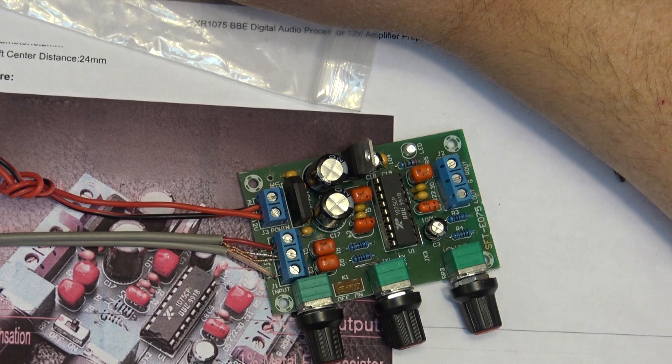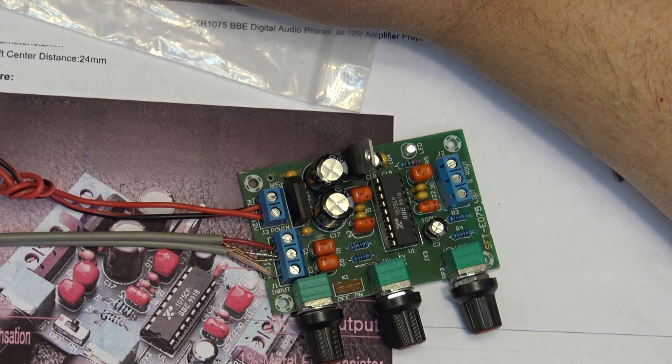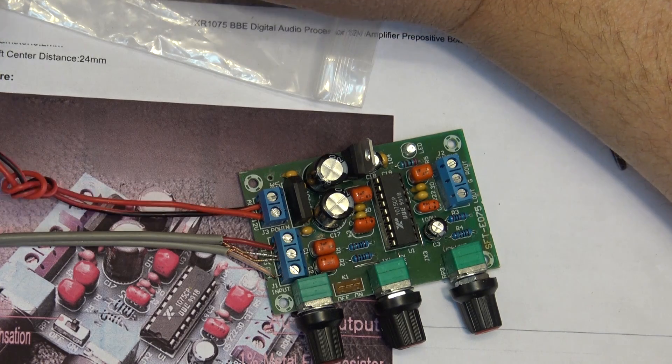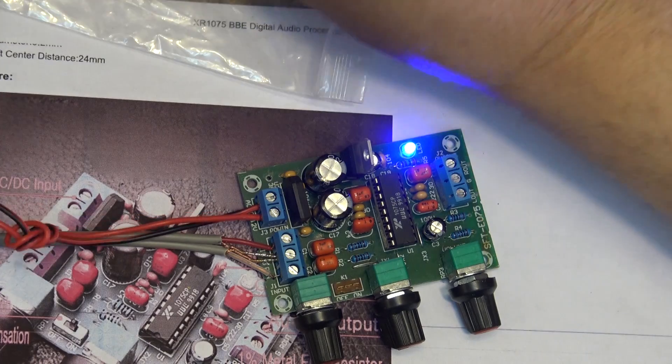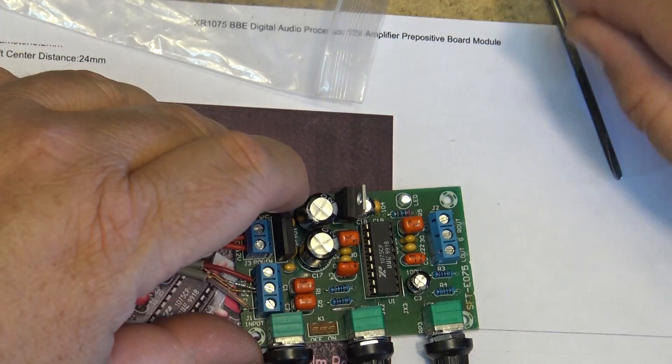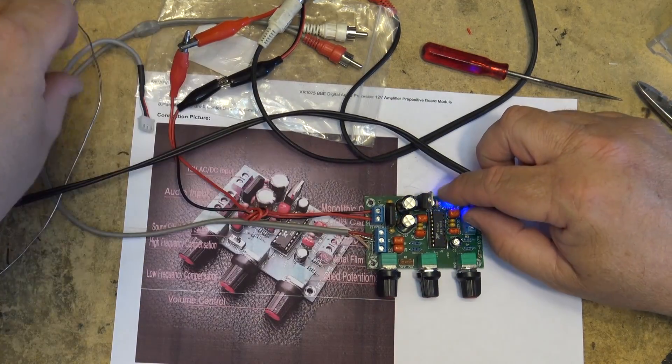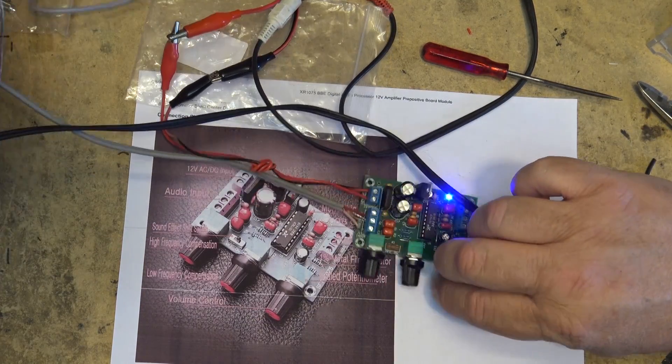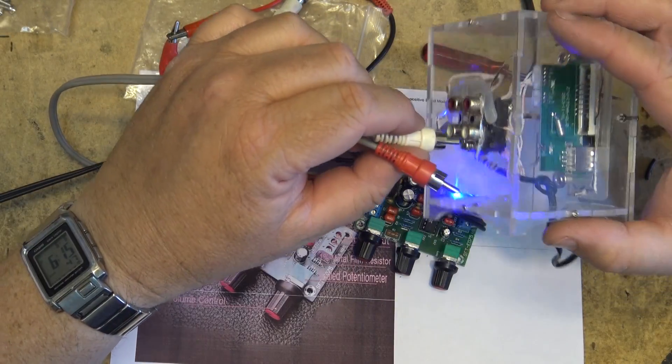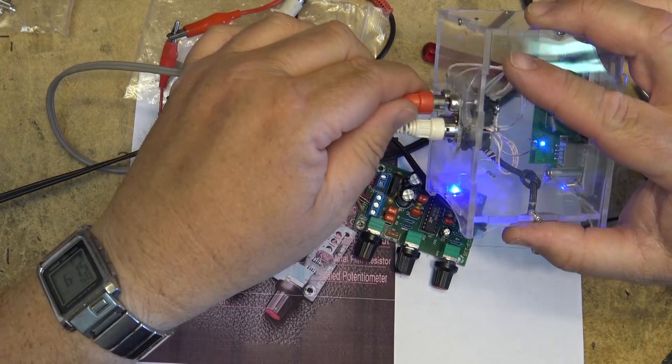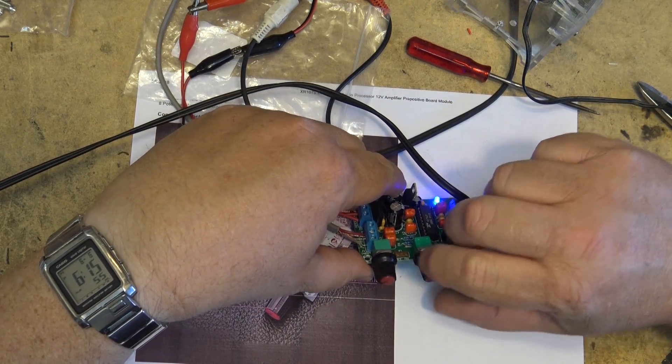It takes 12 volts input. So if I set my power supply up to 12 volts, it has a blue light that comes on to indicate it's got power. I still need to connect my output here to my amplifier so I can hear the sounds. And it might help if I actually plug the input into a sound source. So I'll plug this into my little MP3 player. There we go.